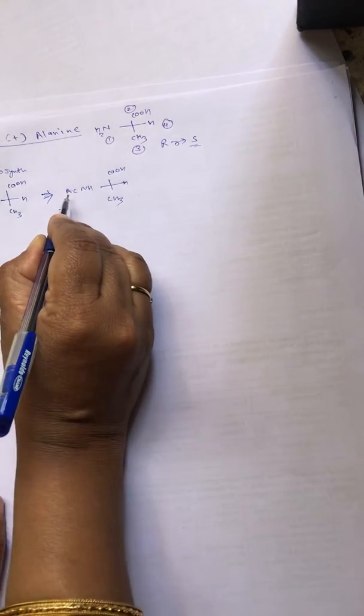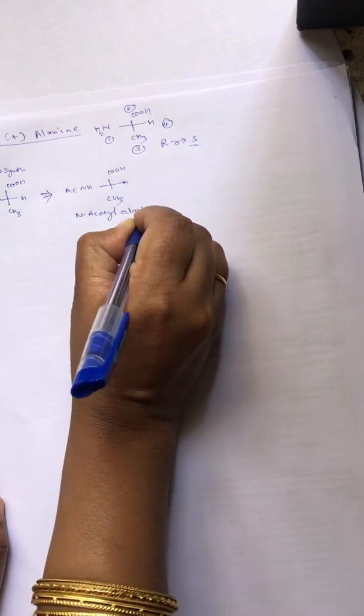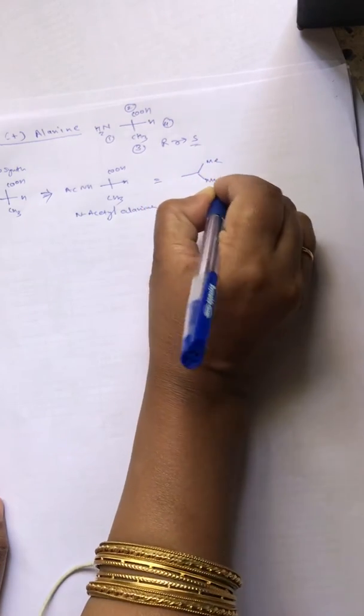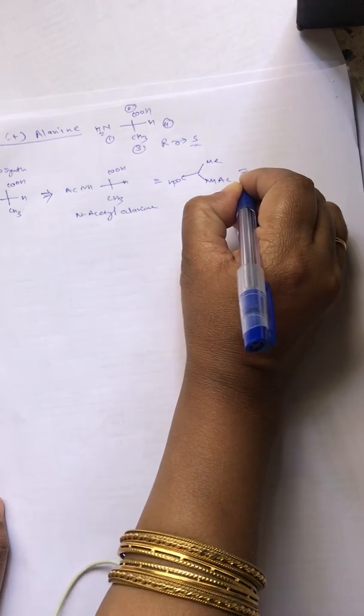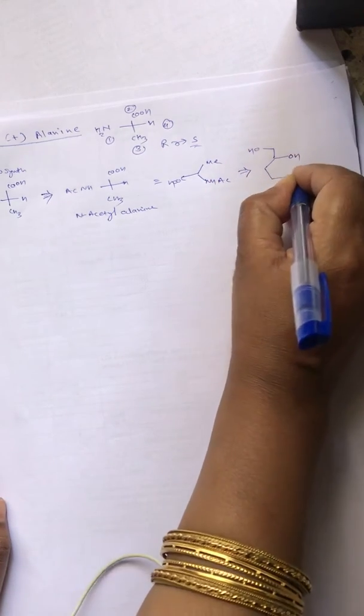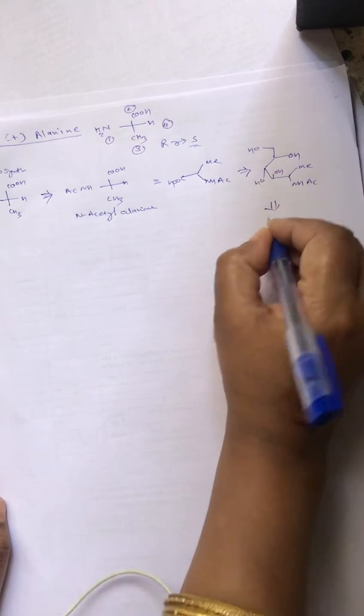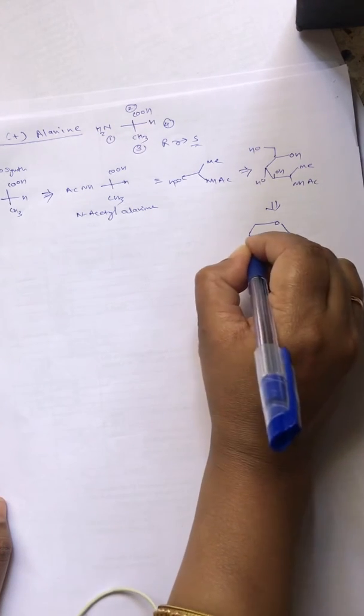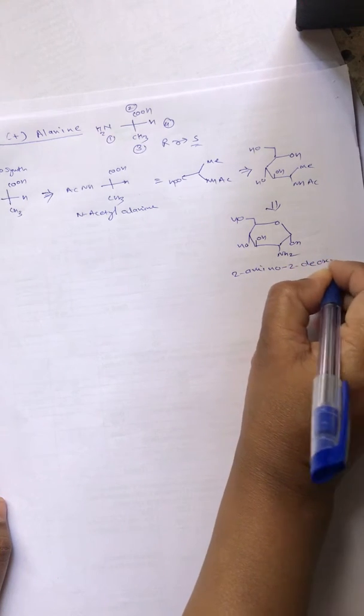This is converted from the acetylated derivative, N-acetyl-alanine, which in turn can be written like this and is prepared from 2-amino-2-deoxy-D-glucose.